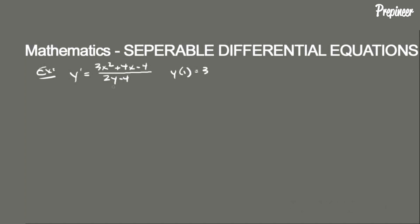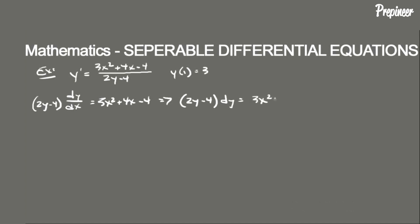We multiply through by (2y minus 4), and notice that y prime is dy/dx. Multiplying through, we get (2y minus 4) equal to (3x squared plus 4x minus 4), and then multiplying through by dx we get (2y minus 4) dy equal to (3x squared plus 4x minus 4) dx.